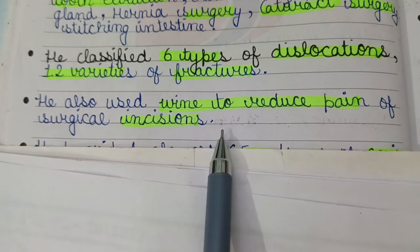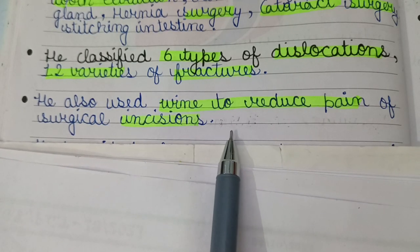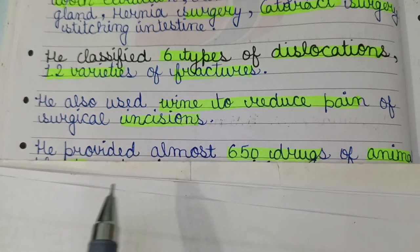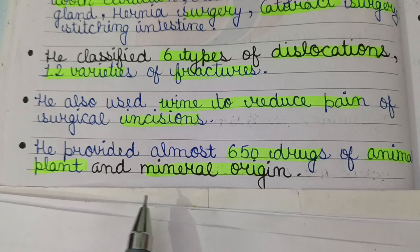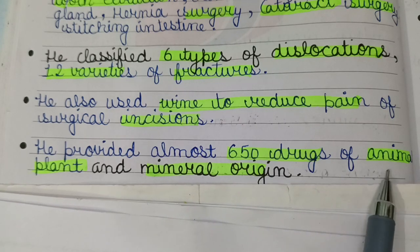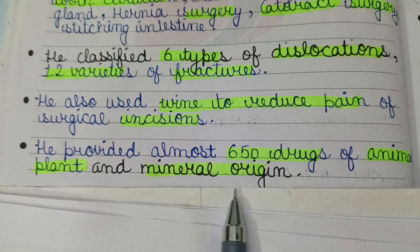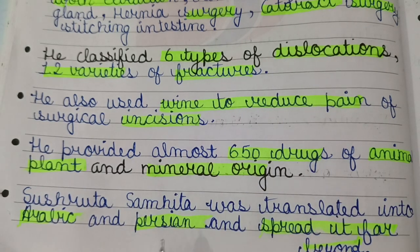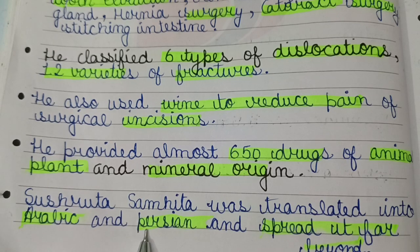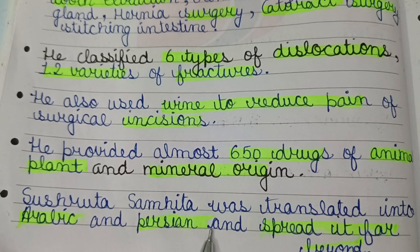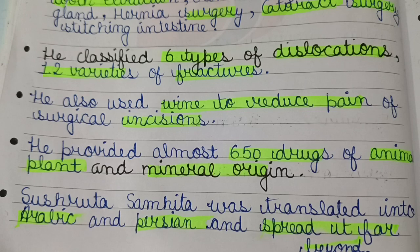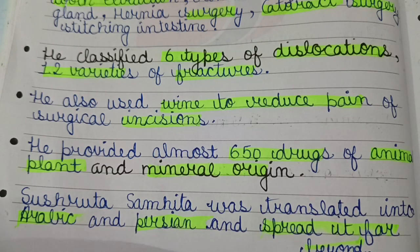This is similar to today's use of anesthesia for surgical procedures. He provided almost 650 drugs of animal, plant, and mineral origin. The Sushruta Samhita was translated into Arabic and Persian and spread Ayurveda far beyond India.